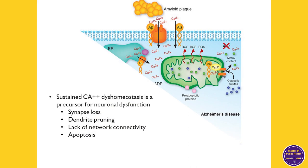This sustained calcium dyshomeostasis is a precursor for neuronal dysfunction, including synapse loss — that's the gap between two neurons that is important for communication. We get dendritic pruning, which are the arms of the neuron also key for communication, as well as lack of network connectivity and apoptosis, which is cell death.